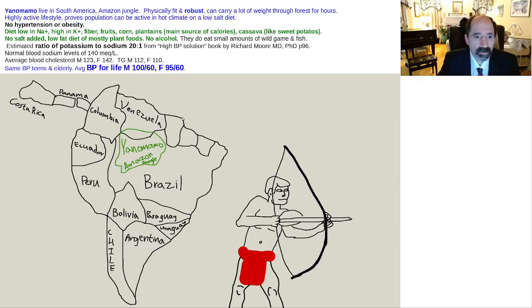They had normal blood sodium levels of about 140 milliequivalents per liter. Their average blood cholesterol for a man, about 123. For a woman, about 142. Triglycerides were men about 112 average, female about 110.